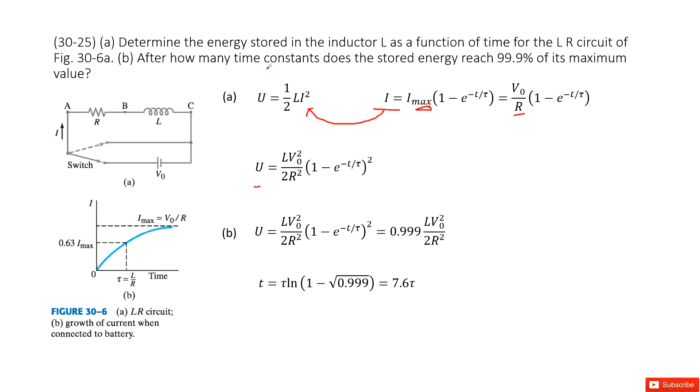The second one asks you after how many time constants does the stored energy reach 99.9% of its maximum value? In this case, that means we can look at the equation for energy u. The energy u changes with time t in this function. And this function says finally at one time, this u reaches 0.999 of the maximum u.